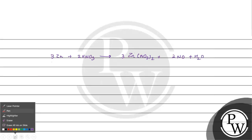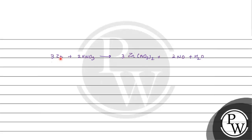Now let's check: nitrogen and zinc balance. Zinc is balanced, but nitrogen — on the left we need 8 HNO3 to provide the nitrate ions for zinc nitrate plus the 2 NO produced. So we use 8 HNO3 total.